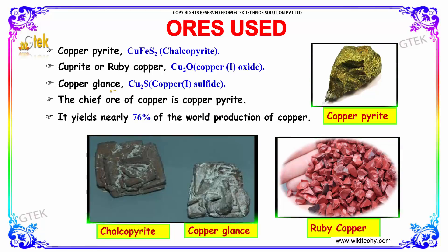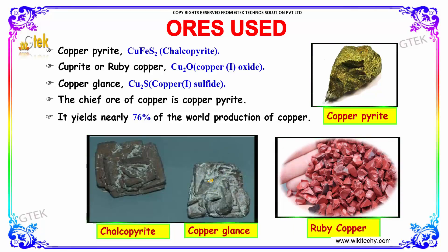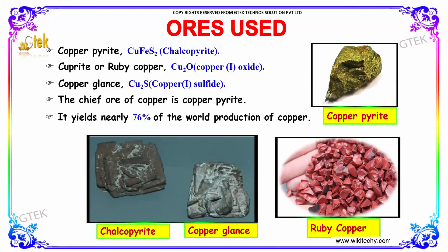And afterwards, copper glands. You are able to see the ruby copper here. The chief ore of copper is copper pyrite. It yields nearly 76% of the world production of copper.